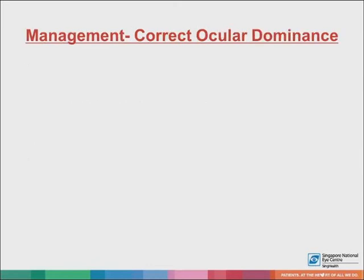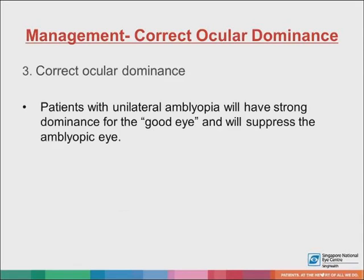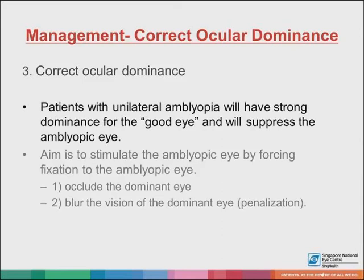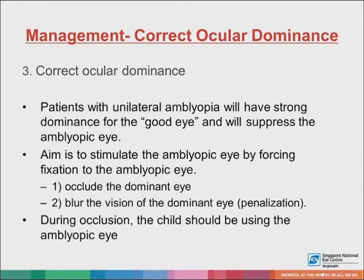Next, ocular dominance needs to be addressed if present. Children with unilateral amblyopia will have strong dominance for the good eye and will suppress the amblyopic eye. The aim of treatment is to stimulate the amblyopic eye by forcing fixation to it, by either occluding the dominant eye or by penalization, which involves blurring the vision of the dominant eye. It is important to note that during occlusion, the child should also be actively using the amblyopic eye.